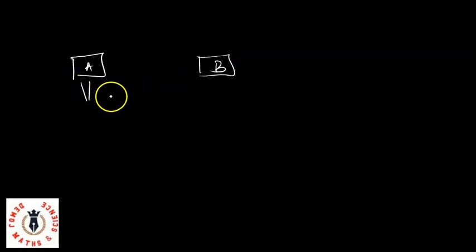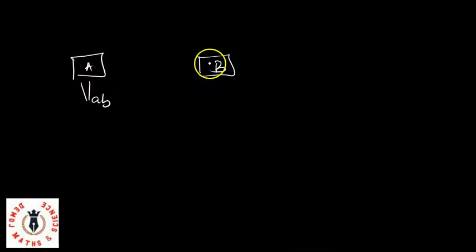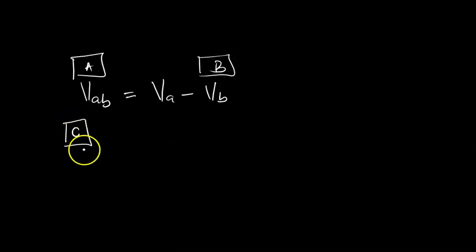Now if I have two cars, car A and car B, the relative velocity of car A to car B is V_AB. This relative velocity is the difference between the velocity of car A with respect to car B. What relative velocity does is compare velocities between two moving bodies. So the velocity of car A with respect to car B, V_AB, equals V_A minus V_B.